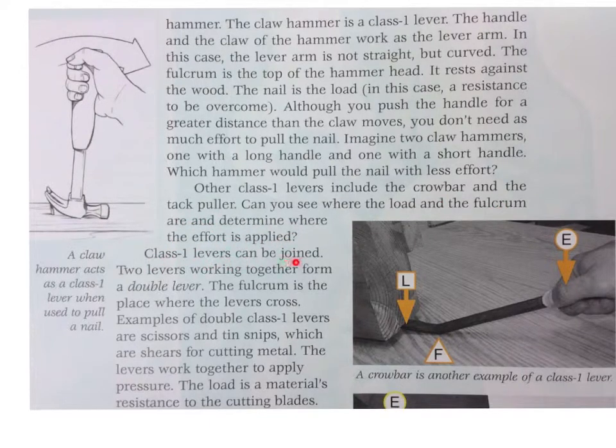Class 1 levers can be joined. Two levers working together form a double lever. The fulcrum is the place where the levers cross. Examples of double class 1 levers are scissors and tin snips, which are shears for cutting metal. The levers work together to apply pressure. The load is the material's resistance to the cutting blades.